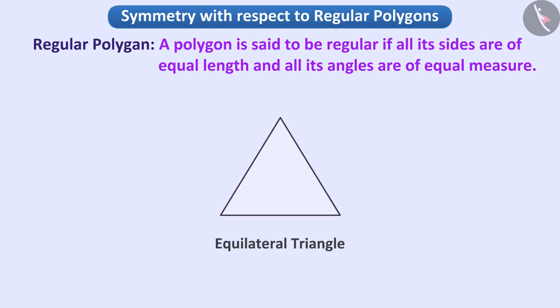Just like an equilateral triangle is a regular polygon. Because all its three sides are equal and all three angles are equal, each measure of 60 degrees.